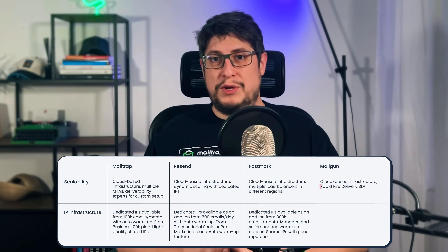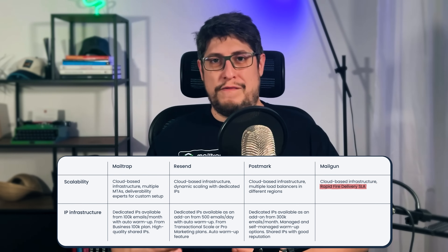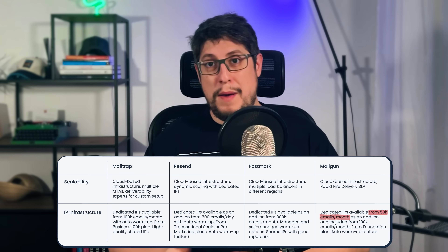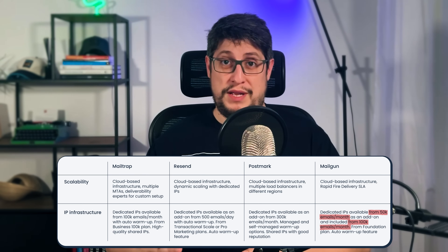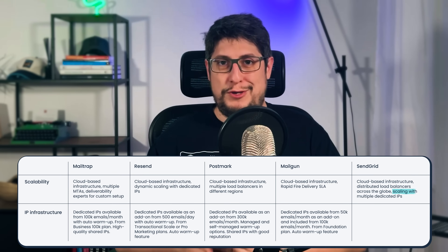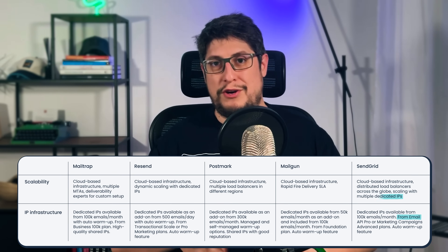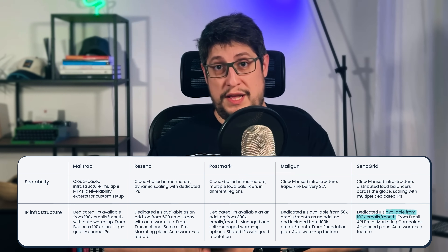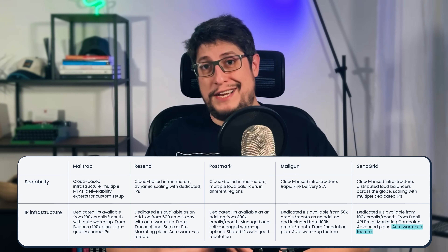Apart from cloud-based infrastructure, Mailgun has a rapid-fire delivery SLA as a guarantee for fast delivery at high volumes. Mailgun provides access to dedicated IPs for users sending 50,000 emails per month or more on a foundation plan, but only includes it in pricing starting from 100,000 emails per month. SendGrid has distributed load balancers across the globe to process large volumes of emails quickly, and to aid scalability it allows users to split traffic between several dedicated IPs, available starting from the pro plan for email API and the advanced plan for marketing campaigns, for users sending more than 100,000 emails per month. Warm-up is handled automatically, and additional dedicated IPs are available as an add-on. So Postmark and SendGrid use distributed load balancers, Resend scales using multiple dedicated IPs, Mailgun has rapid-fire delivery SLA, and MailTrap scales horizontally with a customizable setup.